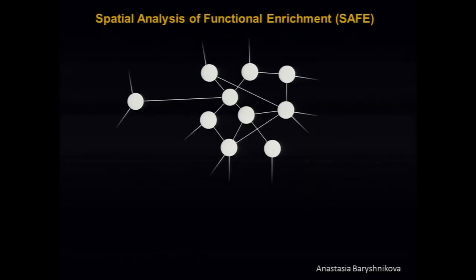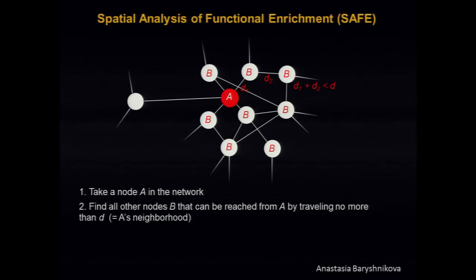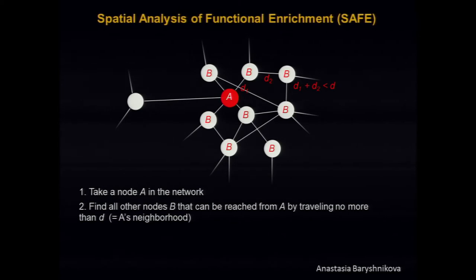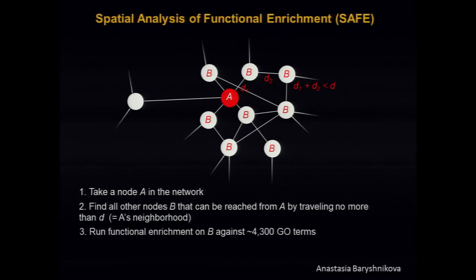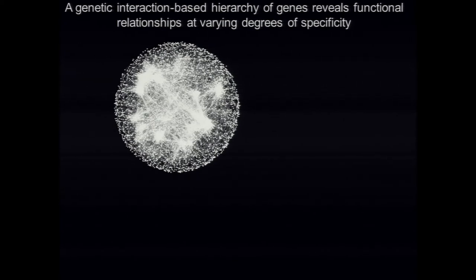Anastasia decided to computationally annotate function in this network by taking a node A and finding all other nodes B connected to A through a defined number of steps — defining A's neighborhood B. We then look at functional enrichment for various GO terms in that neighborhood. Here's an example: this region of the combined genetic interaction network is highly enriched in GO terms indicating roles for these genes in vesicle function, providing a very tight functional definition using this neighborhood approach. You can continue to do this for the entire network at different levels.